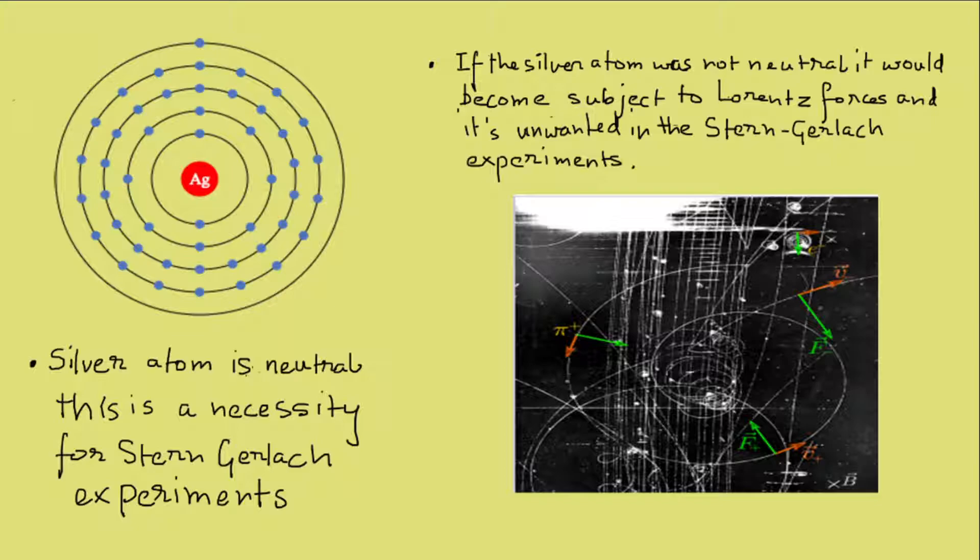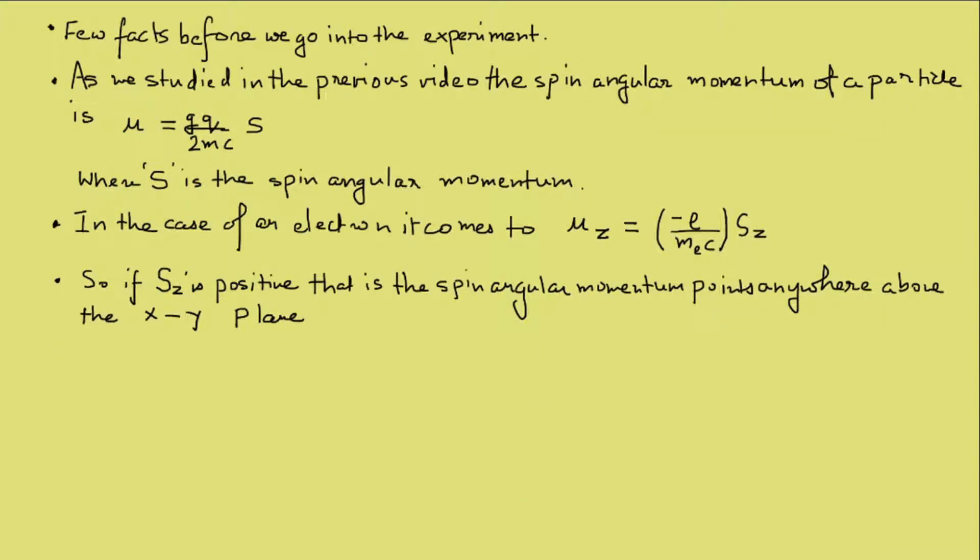As we studied in the previous video, the magnetic moment of a particle is mu equals gq over 2mc into s, where s is the spin angular momentum.